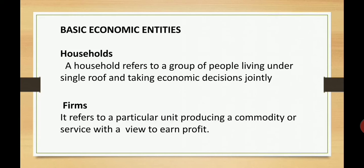Next comes firms. What is a firm? It refers to a particular unit producing a commodity or a service with a view to earn profit. It is a unit where goods and services are produced, and the main motive is to earn profits. That is why they do production — to earn profits.